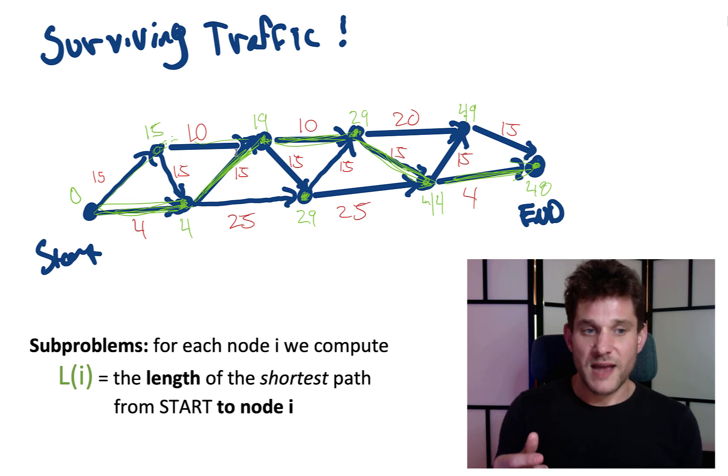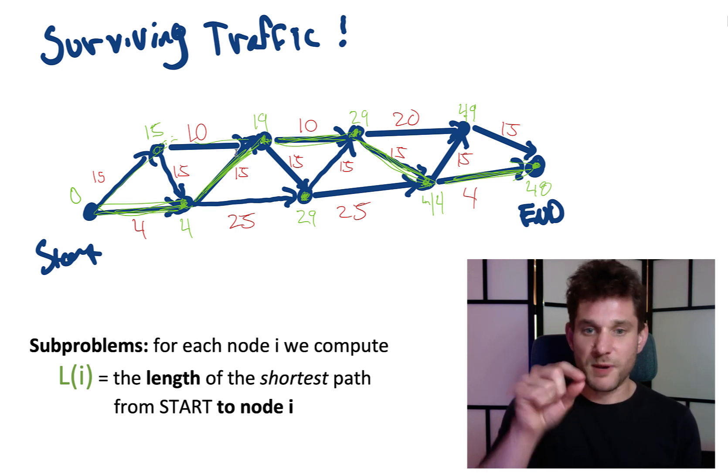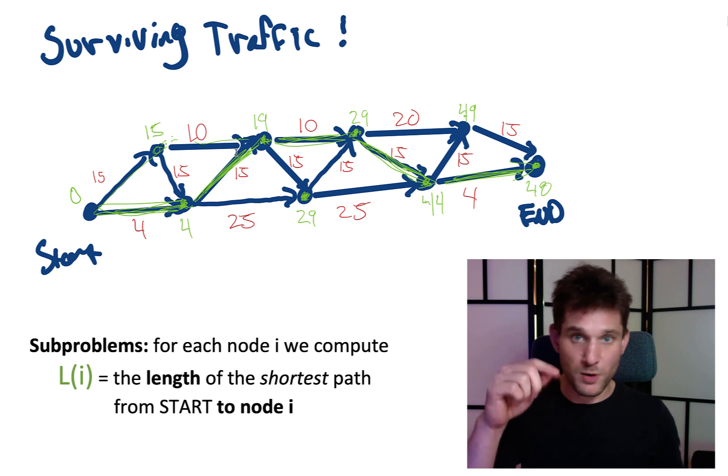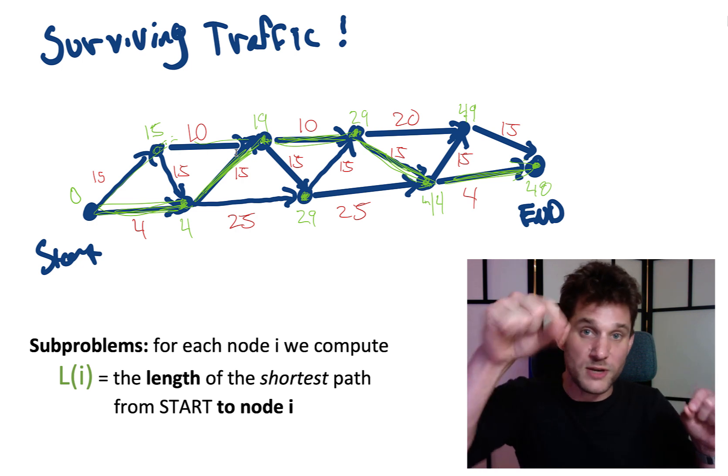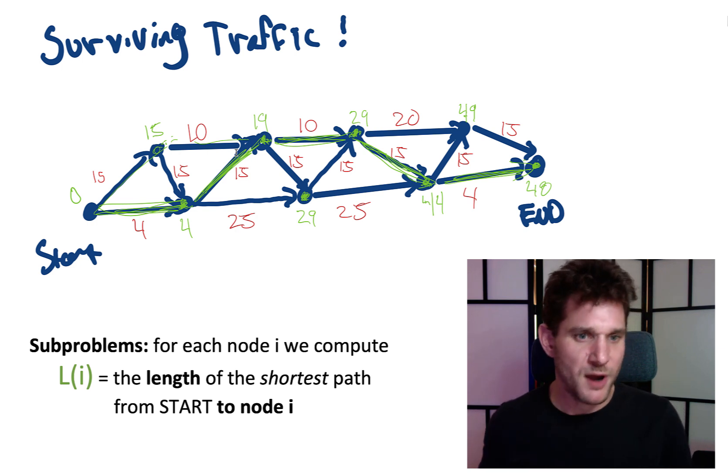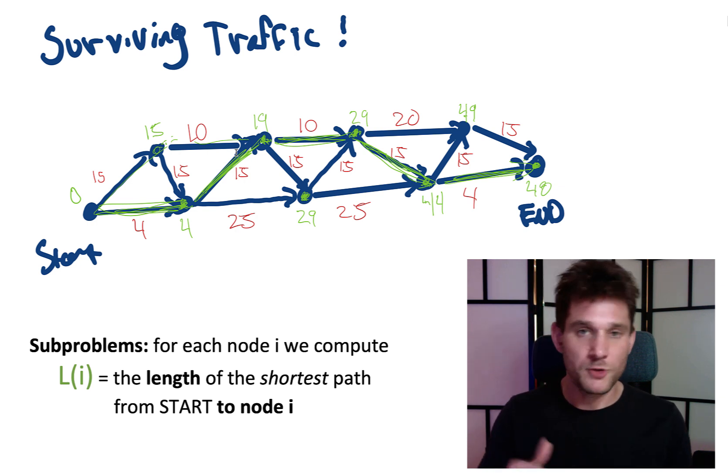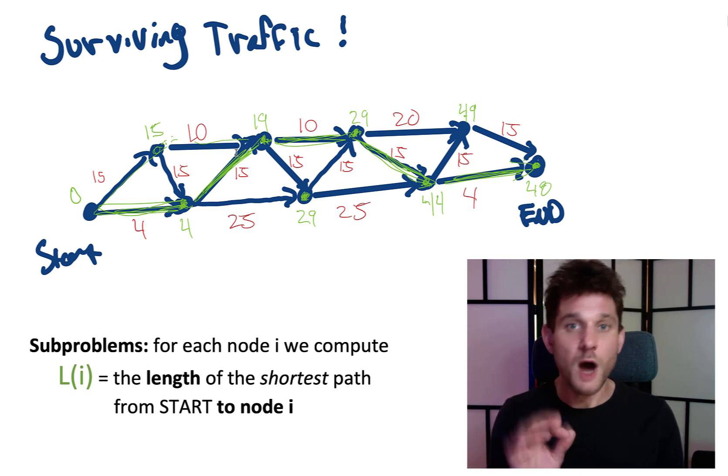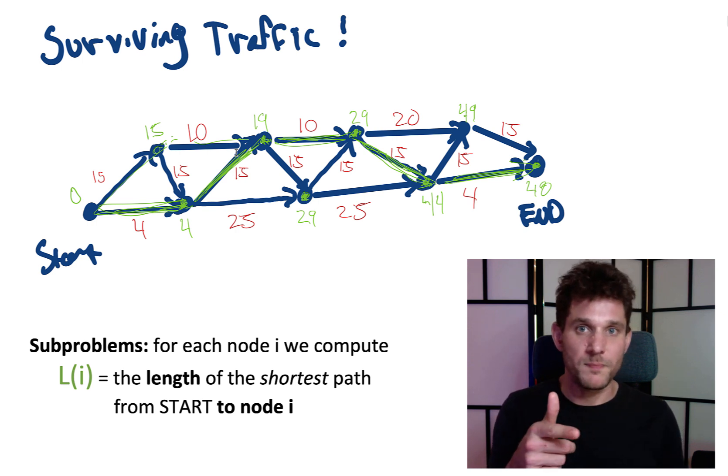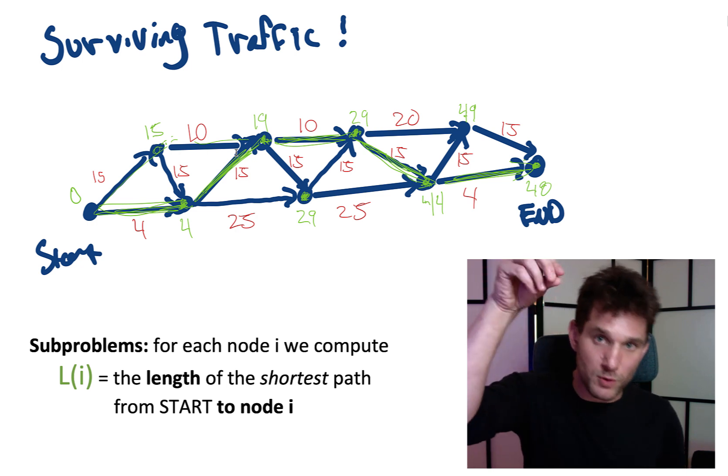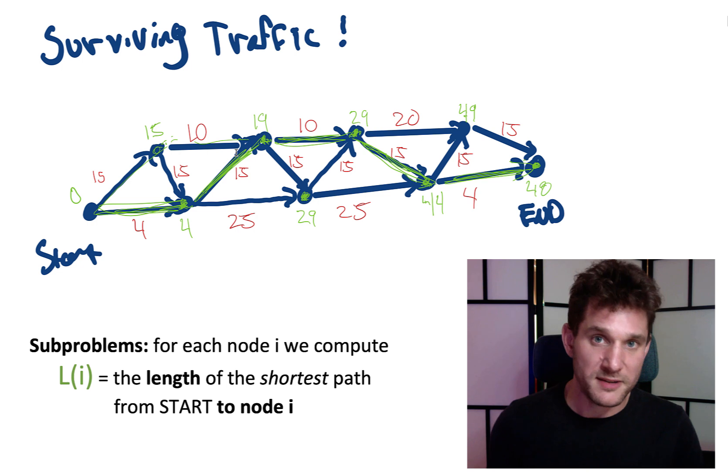But the key thing to note here is that we had to realize, to solve this big problem, we had to realize we could break it into these smaller subproblems. In this case, the smaller subproblem is computing the shortest distance from the start node to an intermediate node. Without having seen the solution, it might not be obvious that's the right way to solve this problem. It takes a little bit of ingenuity to come up with this correct subproblem. So when you're solving these dynamic programming problems, just keep in mind that the hard part is coming up with the correct subproblem and then figuring out how you can recursively solve them in this iterative fashion, how you can reduce solving one problem to smaller instances of that problem.